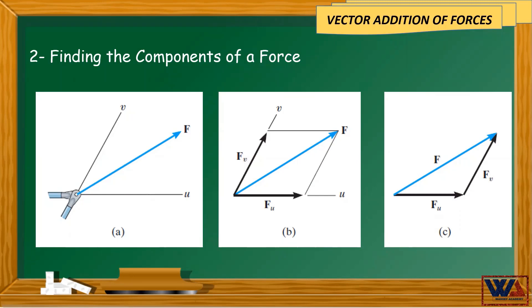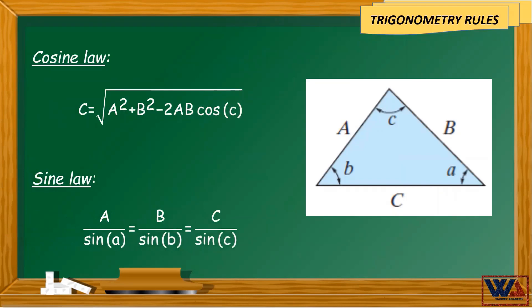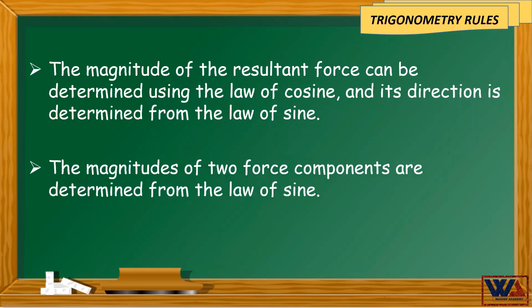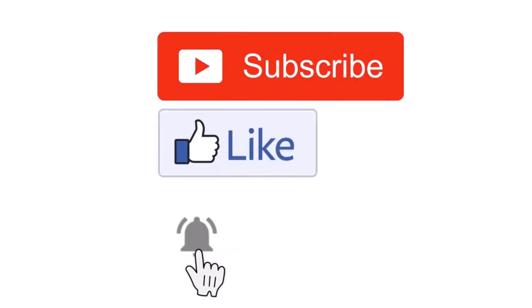After getting the triangular shape from the parallelogram or triangle method, we can use the trigonometry rules. In trigonometry, we have two rules: the cosine rule and the sine rule. These rules can be applied to any triangle. In statics, the magnitude of the resultant force can be determined using the law of cosines, its direction is determined from the law of sines, and the magnitudes of two force components are also determined from the law of sines.